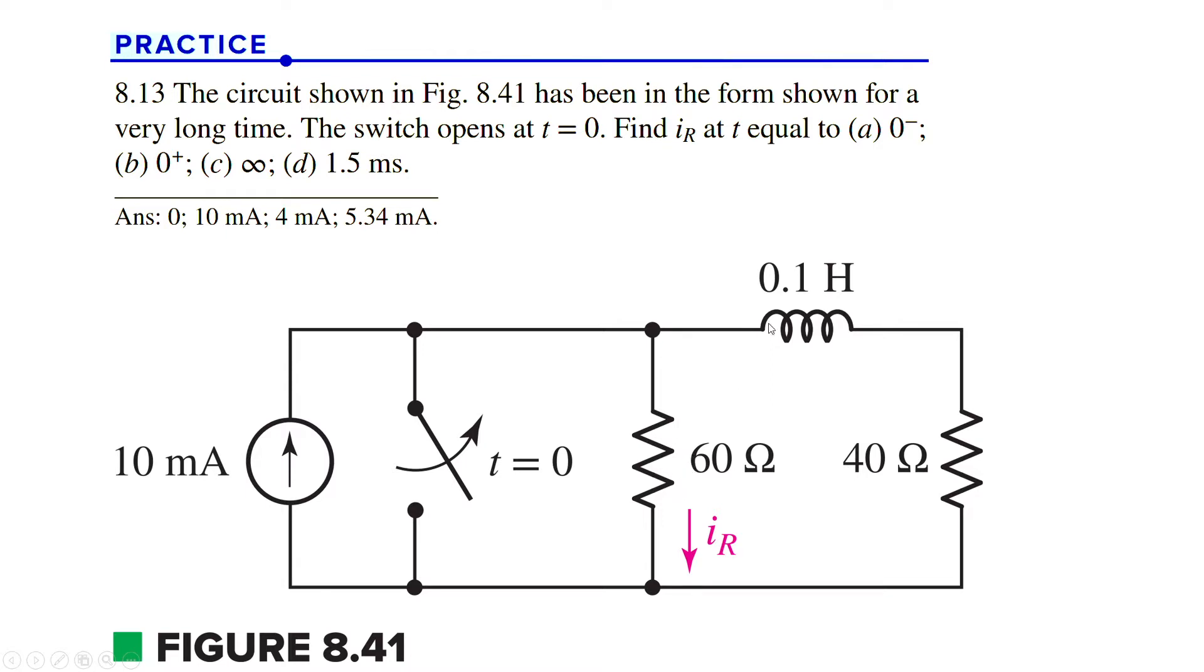We have to make sure that at zero minus, the current through resistance R is zero milliamps, and at zero plus seconds, which is just the next moment, it is 10 milliamps. Then when it has reached steady state, the current should be 4 milliamps.